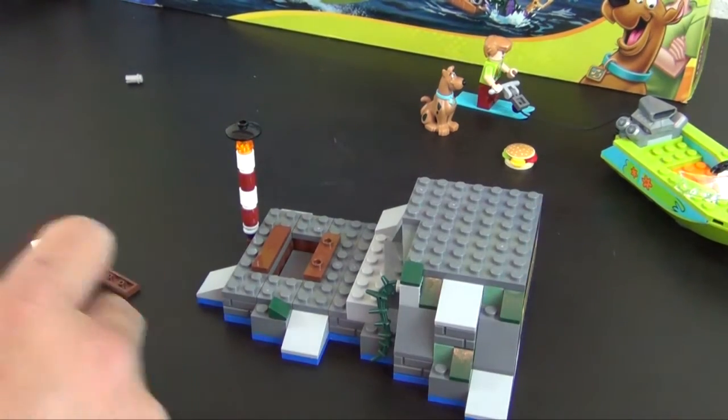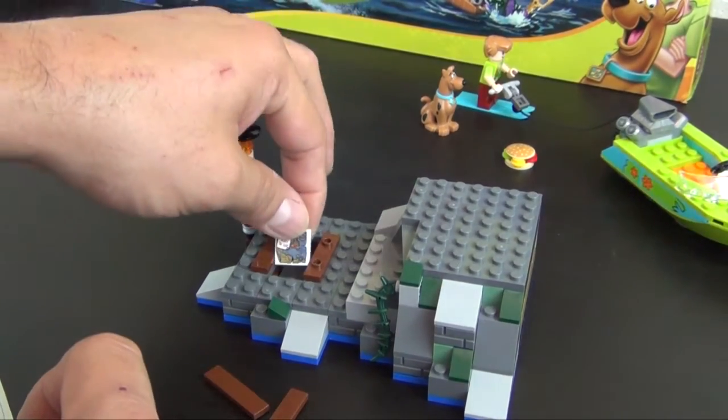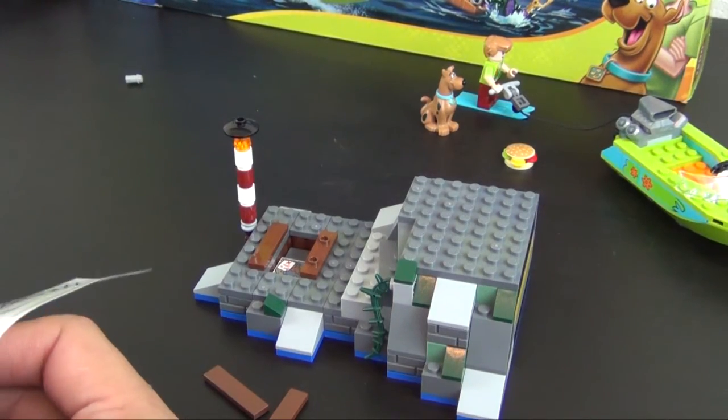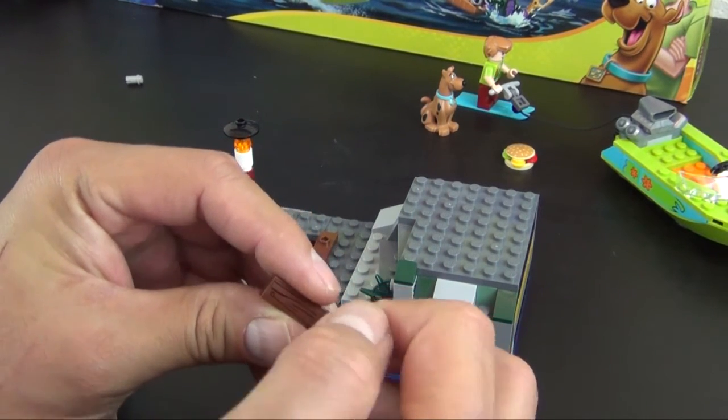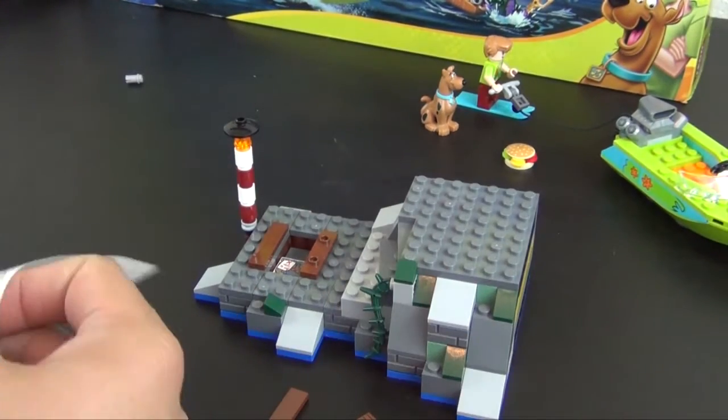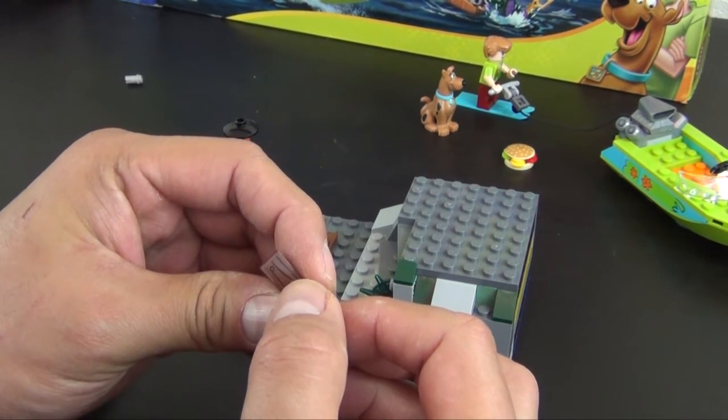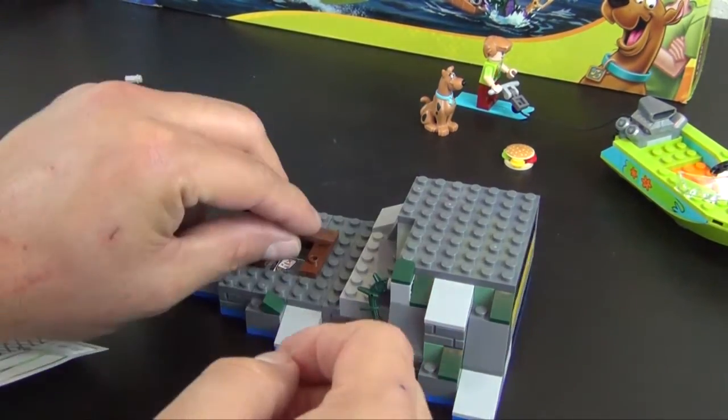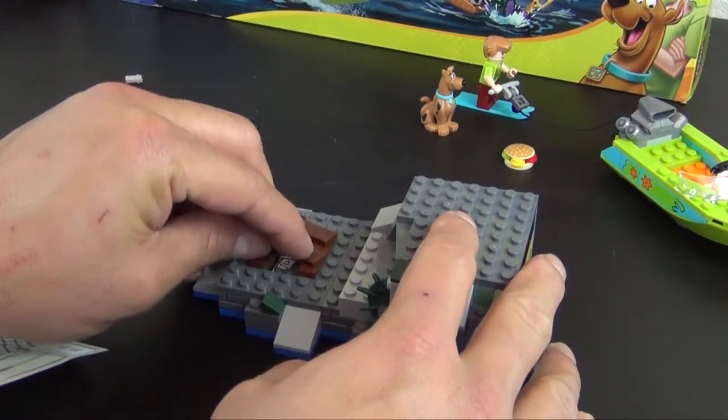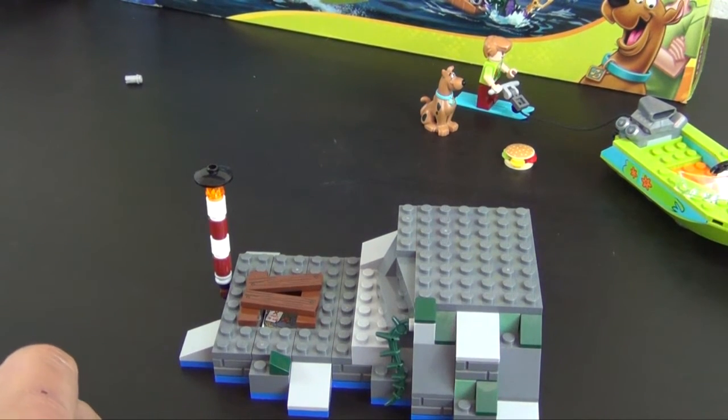Now we have two, there is also this printed map element that goes in there. Two brown 1x4 tiles with this wood pattern sticker. It always confuses me why they sticker these when they actually make a printed 1x4 brown wood pattern. This goes on those two jumpers to create what looks like a boarded up hole in the deck there. Alright, so that completes bag number 2.